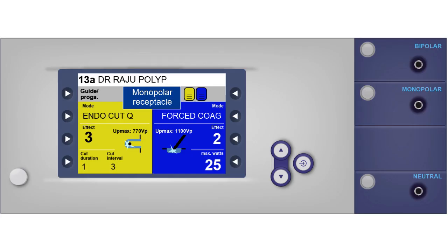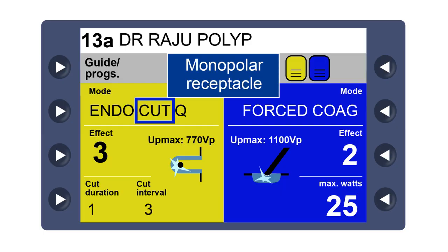When you look at your electrosurgery unit, in my unit I use a Herbie machine. This is what I see: cut current, coagulation current, and how they perform.